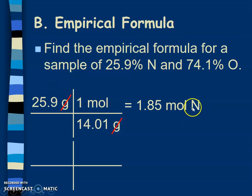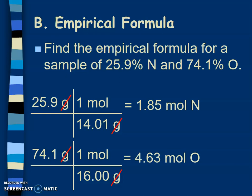I'm definitely going to write nitrogen there so I don't forget which one's which. Now let's do oxygen: 74.1 grams. Go to my periodic table to find my molar mass, which is 16.00 grams per mole. My grams cancel off and I'm left with moles of oxygen. So 74.1 divided by 16 gives me 4.63 moles of oxygen. That's steps one and two.